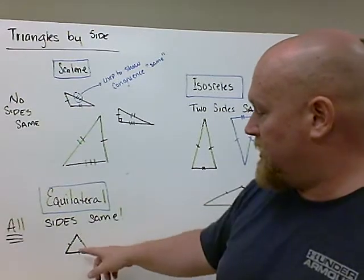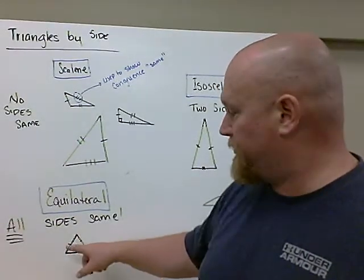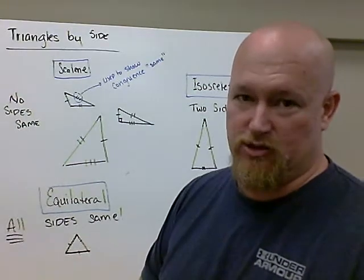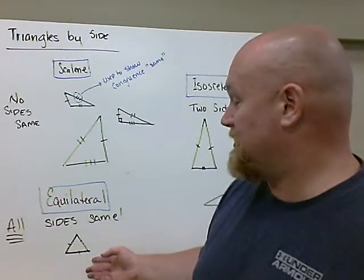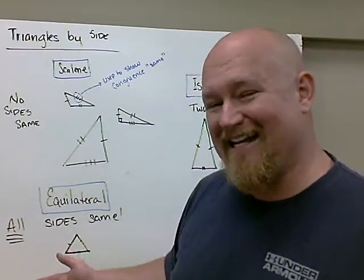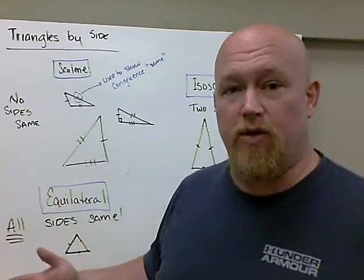Equilateral triangles almost look like the perfect triangle. All three sides have the exact same length of measurement. Matter of fact, they're also equal angular, which means all three angles are exactly the same measurement. It really is almost the perfect triangle.